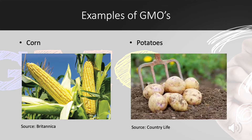Examples of GMOs. Corn is one main example of genetically modified crops. There are over 30 different varieties of modified corn, making it the most common genetically modified crop out there. According to the FDA, the Food and Drug Administration, most corn is genetically modified to resist pests. The modified corn produces proteins that are toxic to pests, but not humans or livestock.